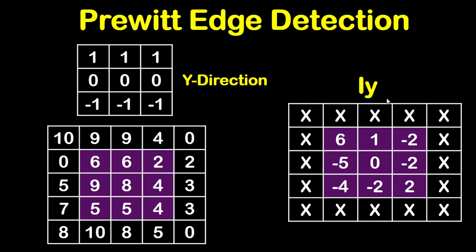Now after getting Ix, we will get Iy. To get Iy, we will use the Prewitt kernel of the y-direction and do the same steps. We will put the center of the kernel on the first required pixel in the highlighted region. So 1 will be on 10, 1 on 9, 1 on 9, 0 on 0, 0 on 6, 0 on 6, negative 1 on 5, negative 1 on 9, and negative 1 on 8.